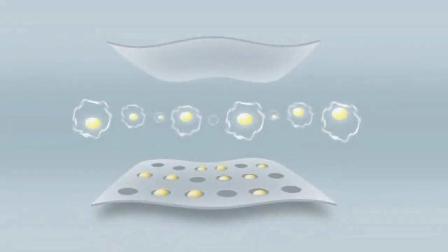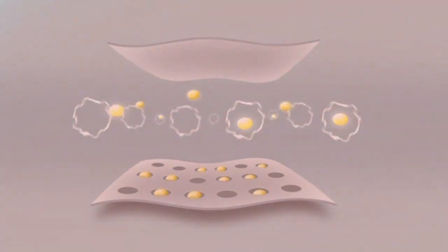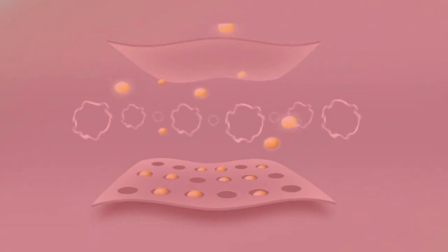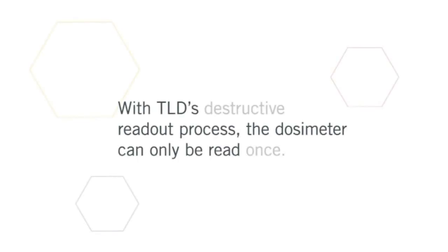While TLD technology uses a similar crystalline structure to trap radiation stimulated electrons, the readout process involves heating the entire crystal, causing all the electrons to leave the traps. This obsolete process depletes all data in a single reading, disabling the potential for any future readings.